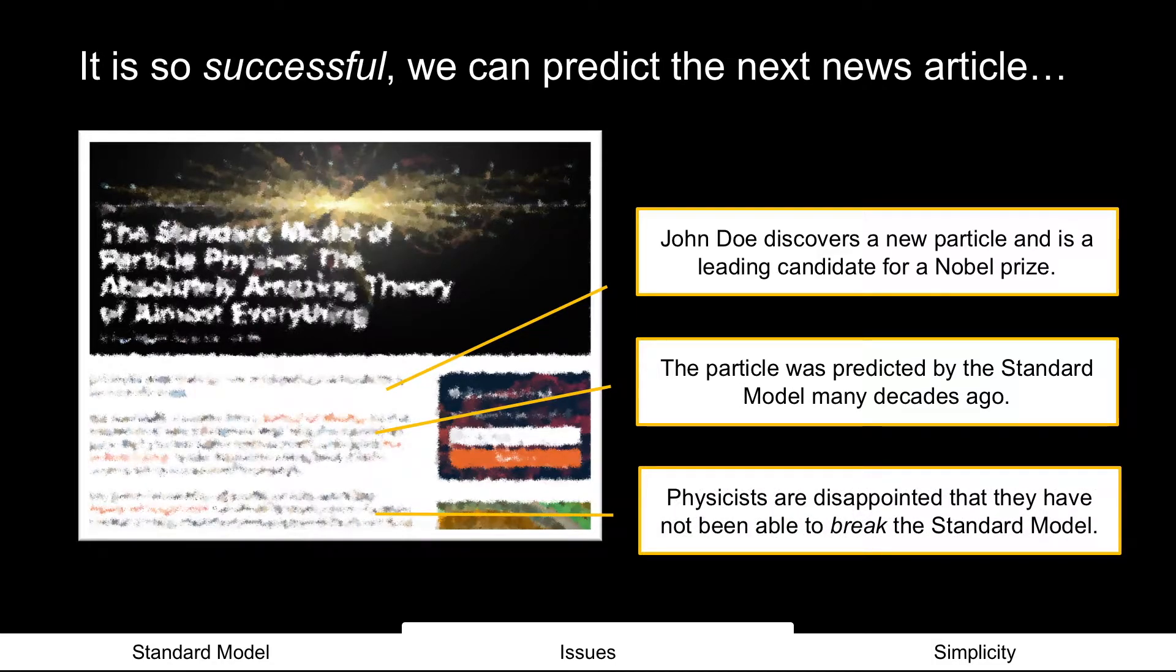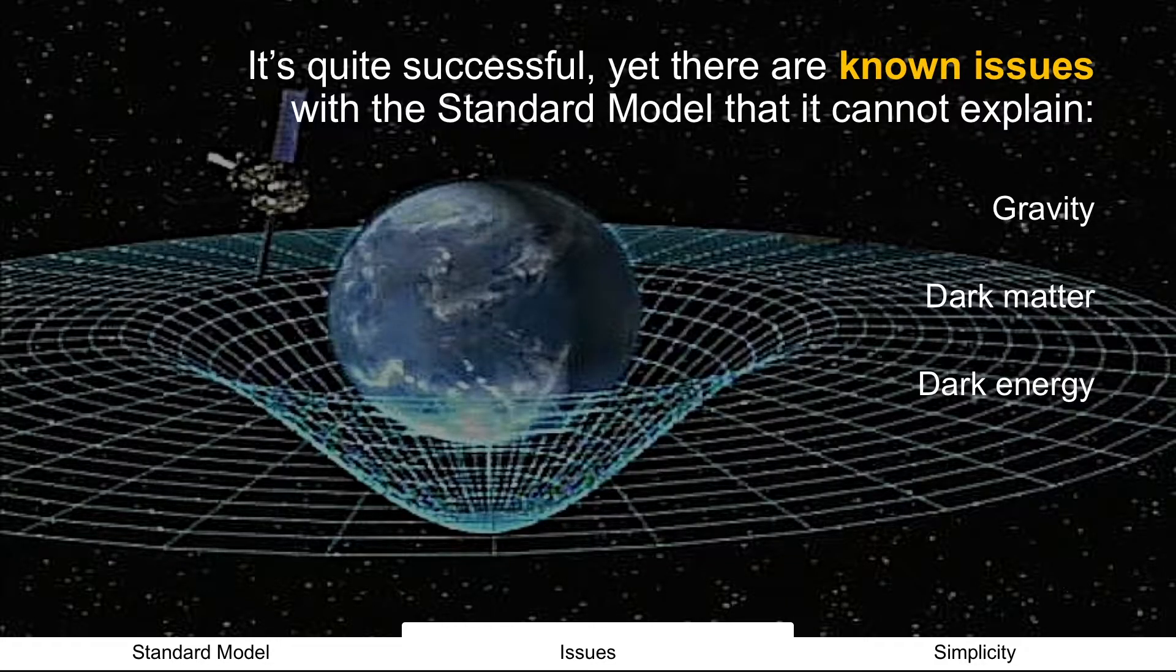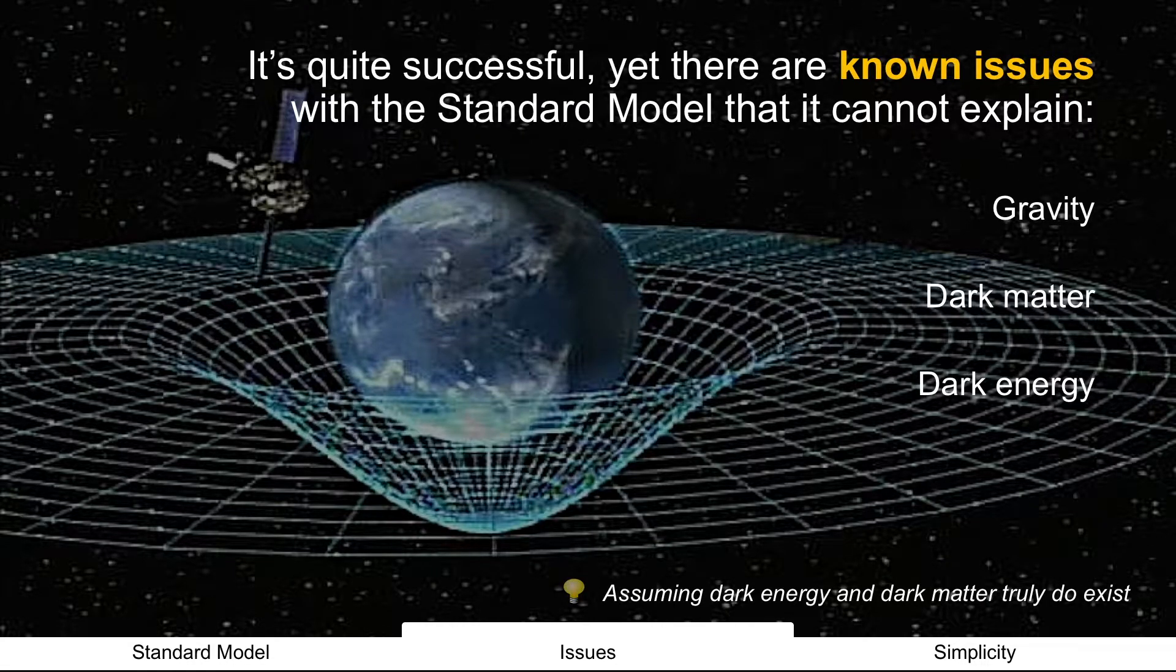And physicists are so disappointed that they have not been able to break the standard model. Really, I don't think they're that disappointed because they'll continue to get funding. Why? It's successful, yet there are known issues that the standard model cannot explain things like gravity or dark matter or dark energy. So, these projects continue to get funded until we have these answers.